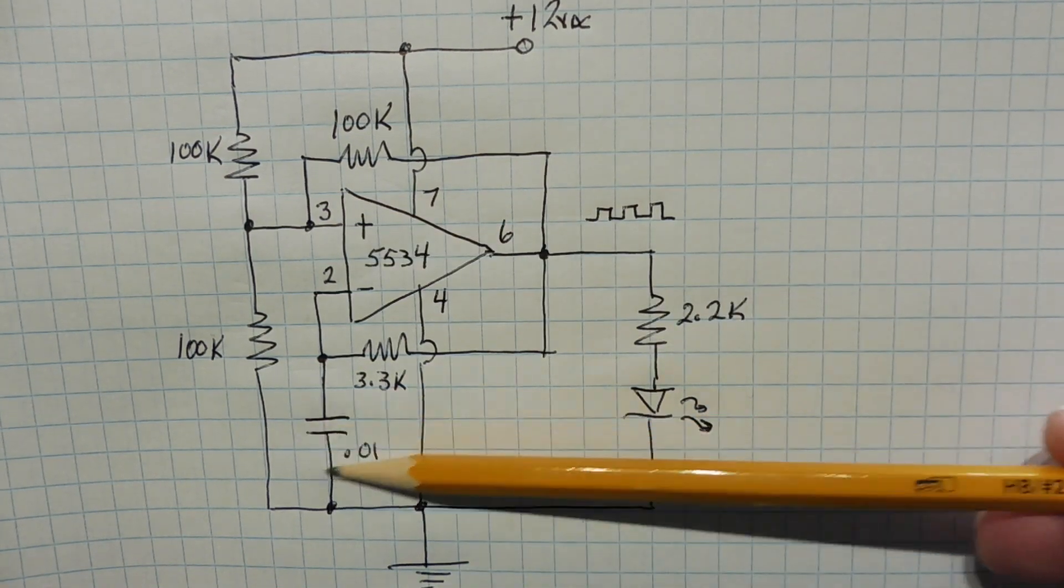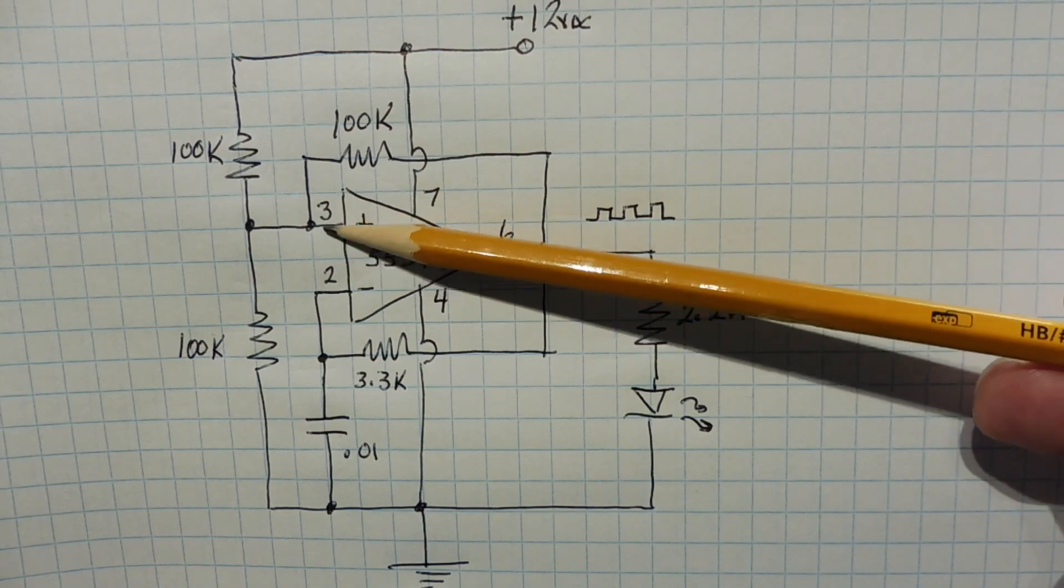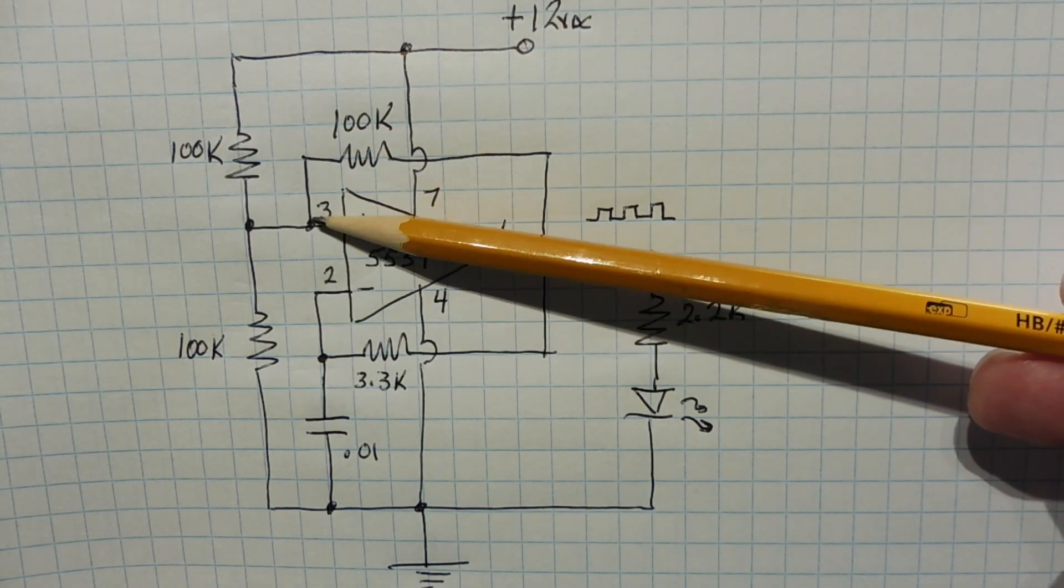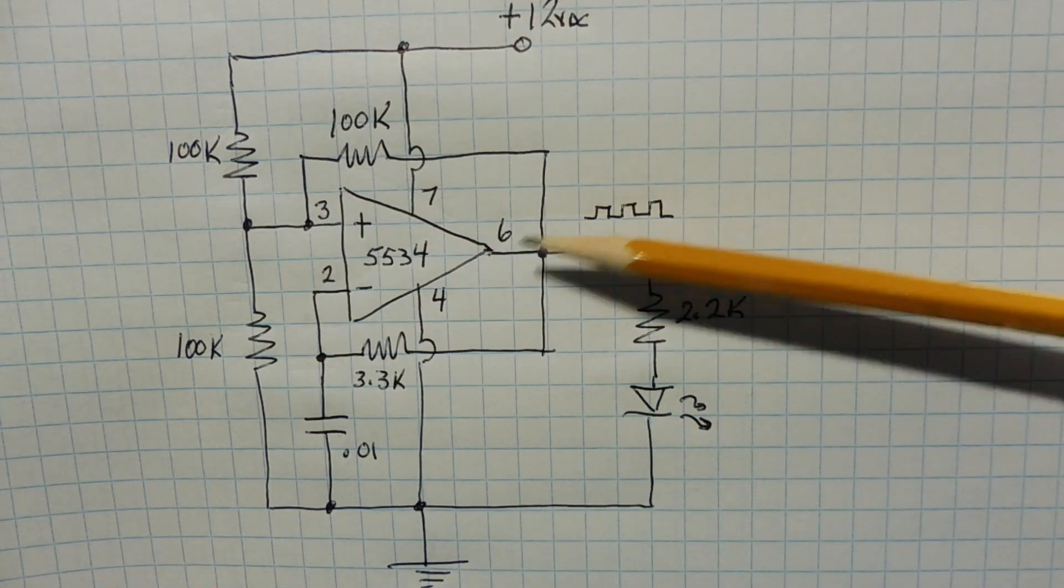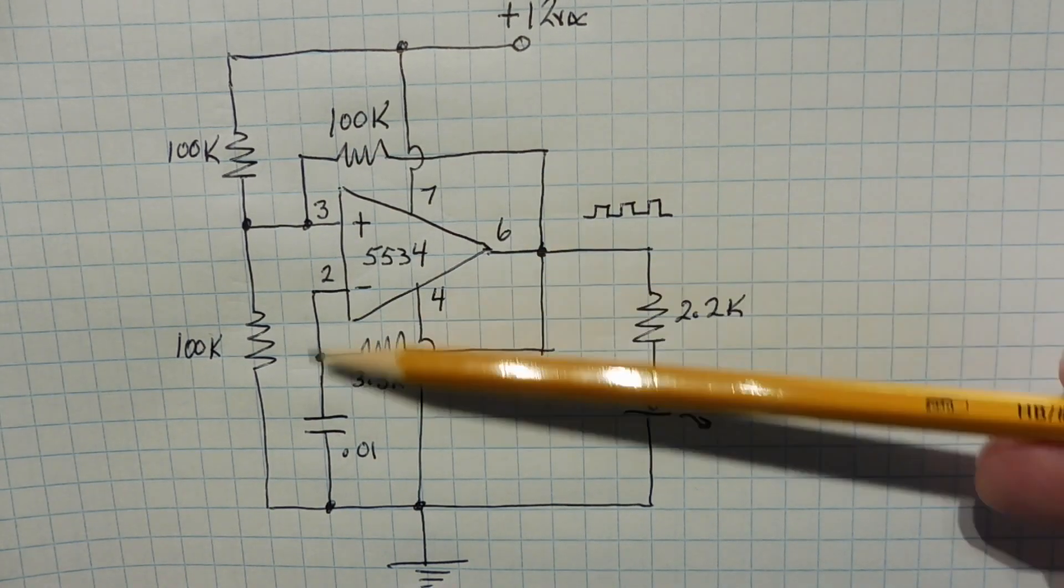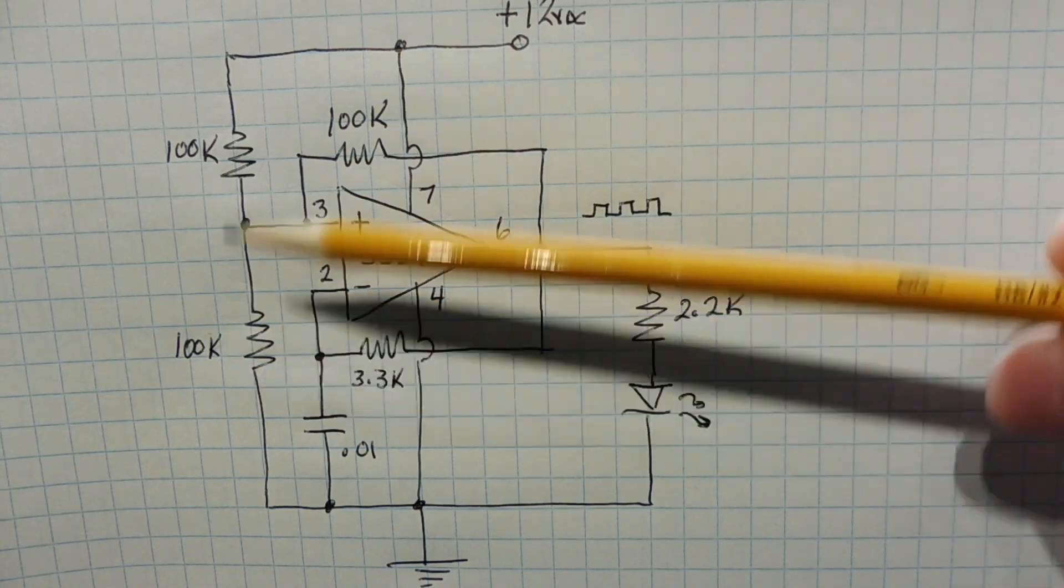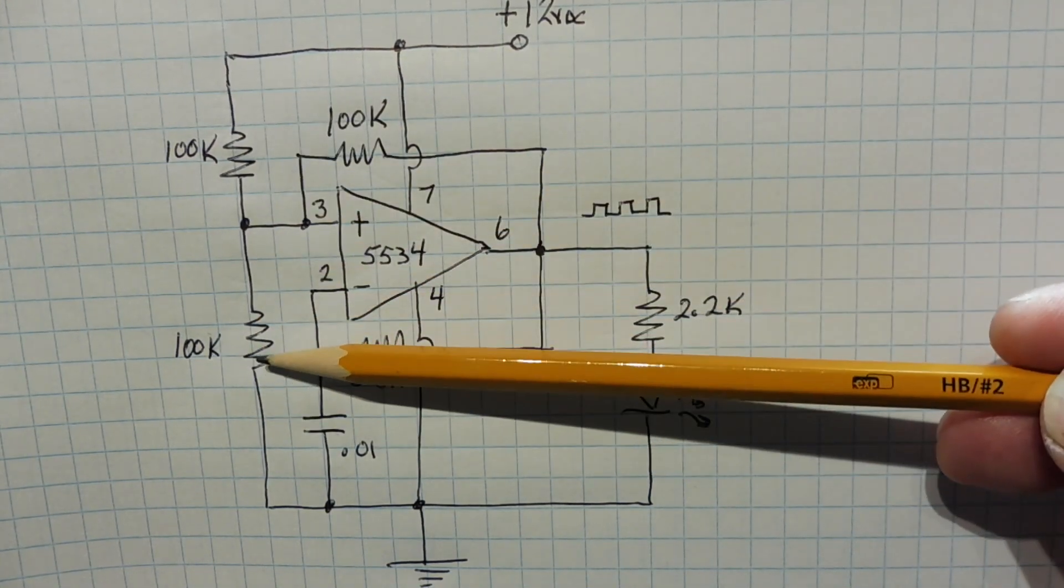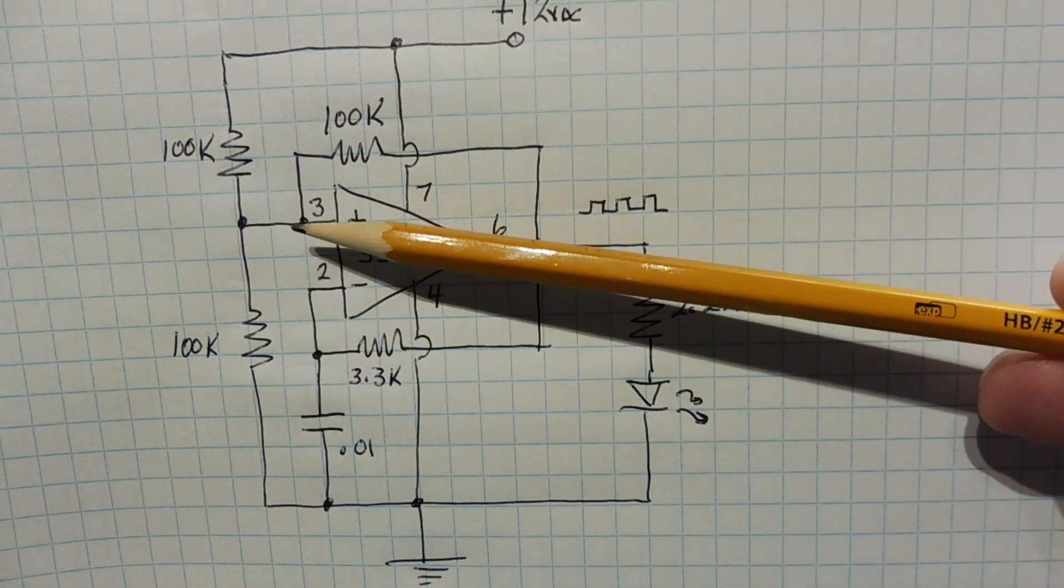So this capacitor will start charging, and when it hits 8 volts, now the pin 2 will be higher than pin 3, so pin 6 will go low. Now when pin 6 is low, this resistor now will be in parallel with this resistor, the bottom resistor. So we'll have 100k on the top, 50k on the bottom, so now pin 3 will be at 4 volts.